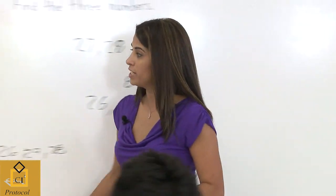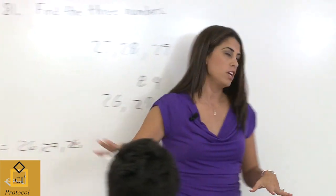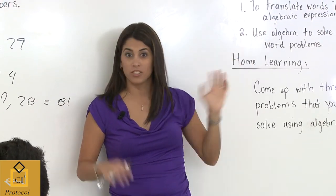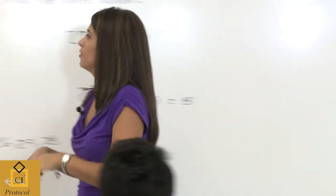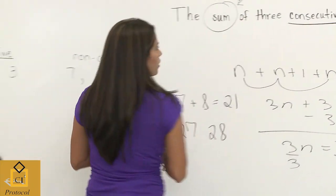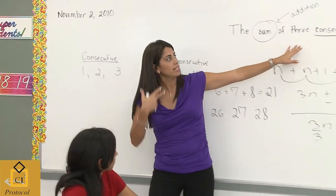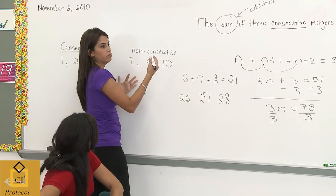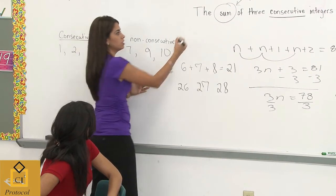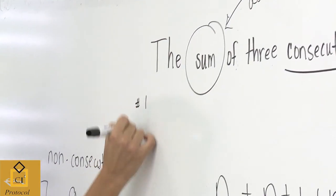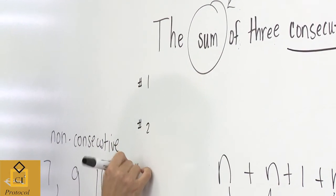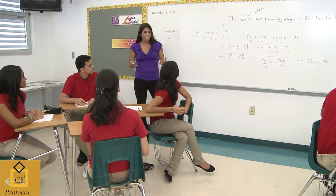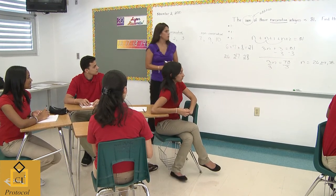Now I'm going to focus on the algebraic way, because today we're going to learn how to translate words into algebraic expressions. If we're talking about three consecutive integers, it would be great to split them up — number one, number two, number three. Do you like listing it? No. Okay, so how about we break them up differently.